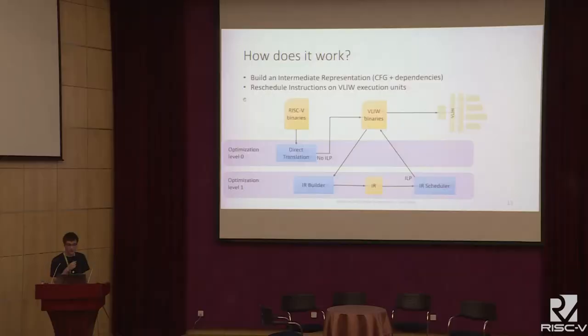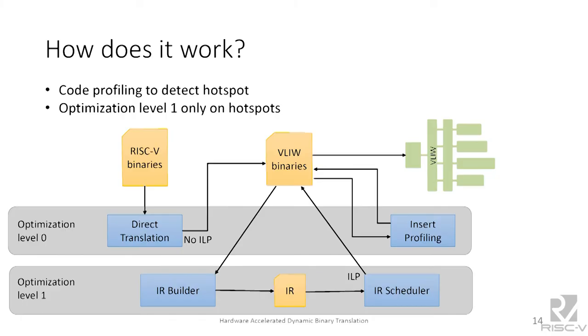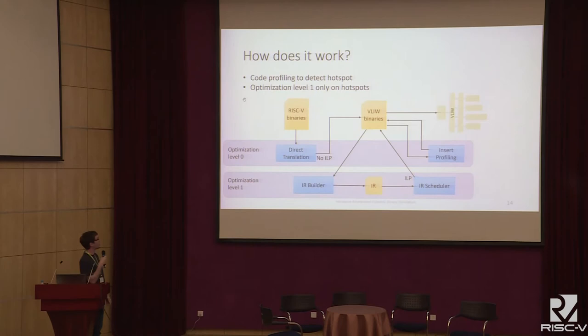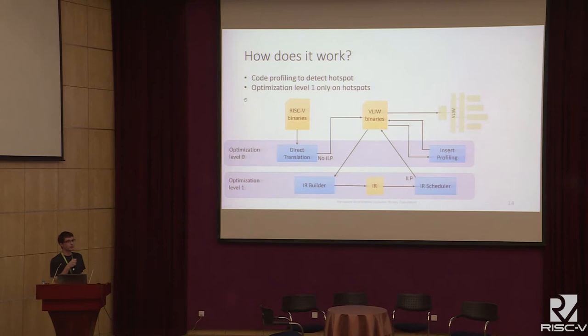Optimization level one is triggered by profiling instructions inserted during optimization level zero, which count how many times a block is executed. If a certain threshold is reached, the next optimization level is triggered. Since we don't exploit instruction-level parallelism in the first optimization level, adding profiling instructions into blank slots was very simple.